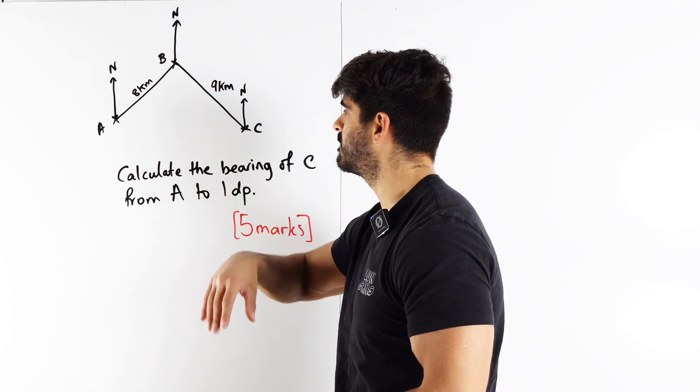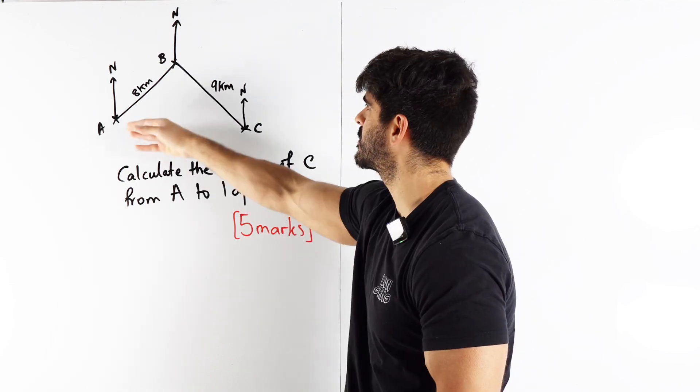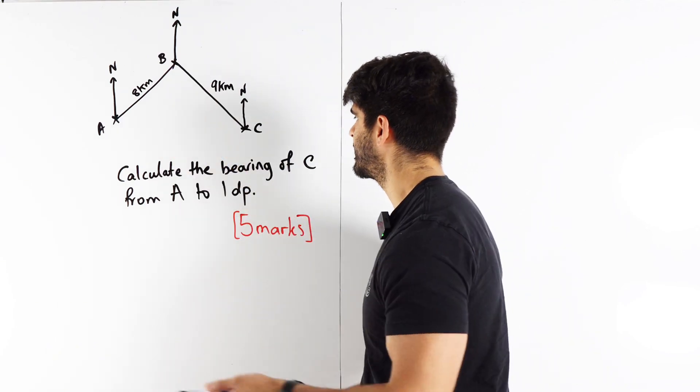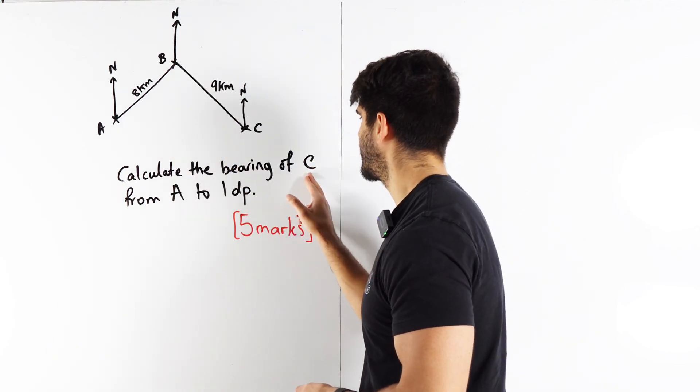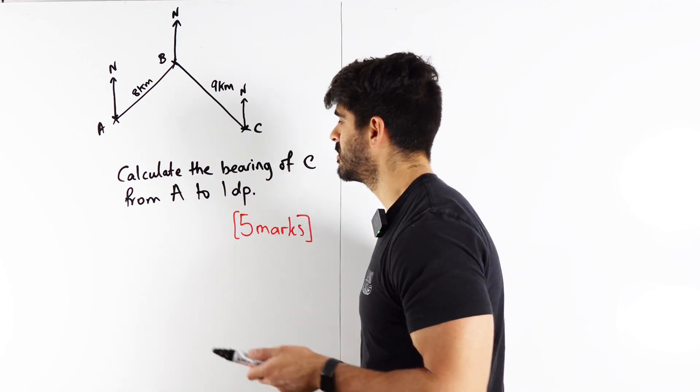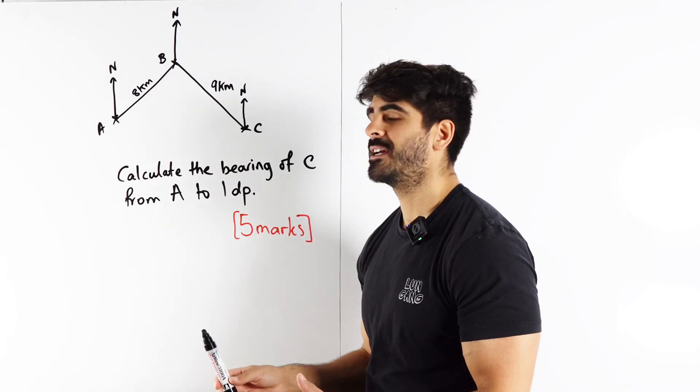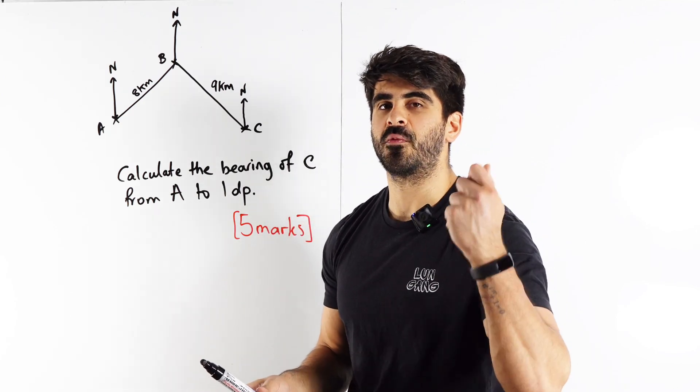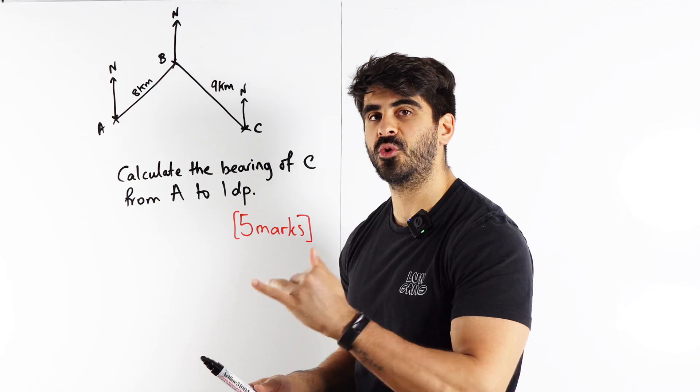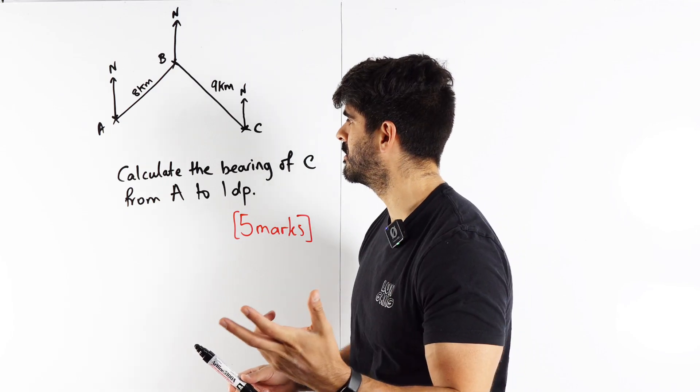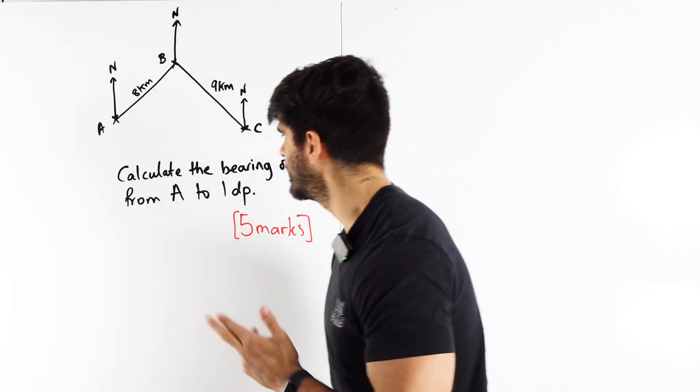So I've just got this picture, it was a past GCSE question, it had some towns, and it said calculate the bearing of the town C from A to 1DP. Now what is a bearing? A bearing is a description of how much you need to rotate the north line to be pointing to where you want to go. It's very simple.